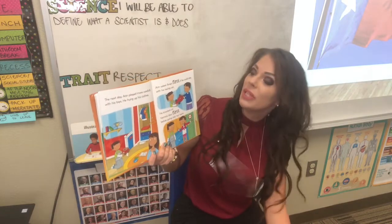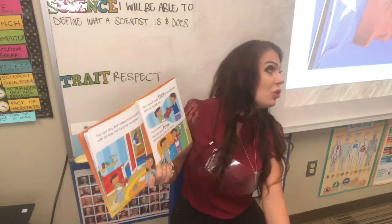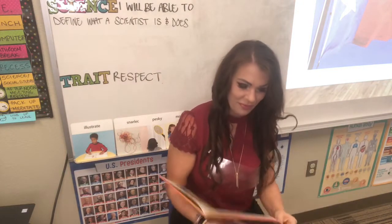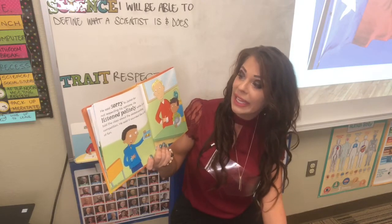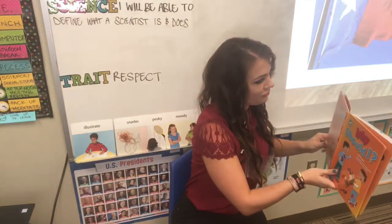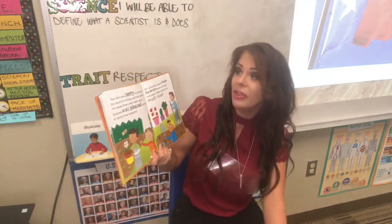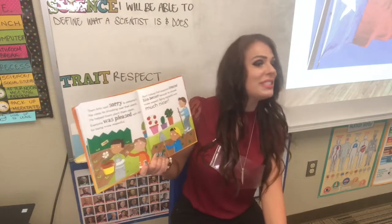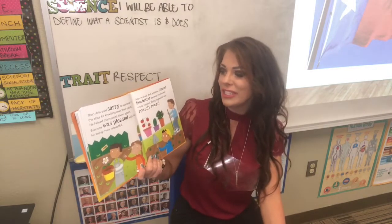He was sorry he hadn't treated people the way he would like to be treated, and said he would try hard to be more respectful. The next day, Aaron played more carefully with his toys and hung up his clothes. He asked Anish first if he could play with his racing car. He knocked on Vanna's door before going into her room. He said sorry to Junior for not respecting his opinions and listened politely while Junior told the class about the skateboarding competition. He said sorry to everyone for knocking over their plants and helped them plant again. Everyone was pleased with Aaron for being more respectful. Aaron noticed that everyone treated him better — being respectful was much nicer.